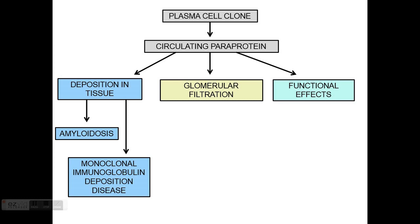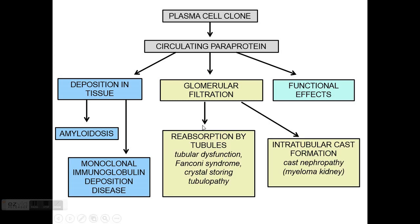If the paraprotein does not deposit in tissue, it may filter through the glomerulus and create tubular problems. It can be reabsorbed by tubules and cause tubular dysfunction, even Fanconi syndrome, or cause crystal-storing tubulopathy when crystals are seen, or light chain tubulopathy in general. Sometimes the light chains remain in the tubular lumen and form casts.